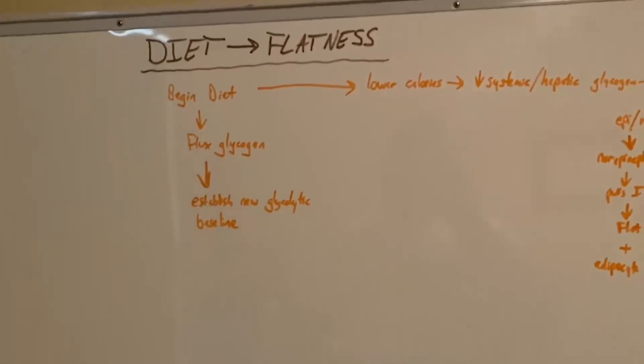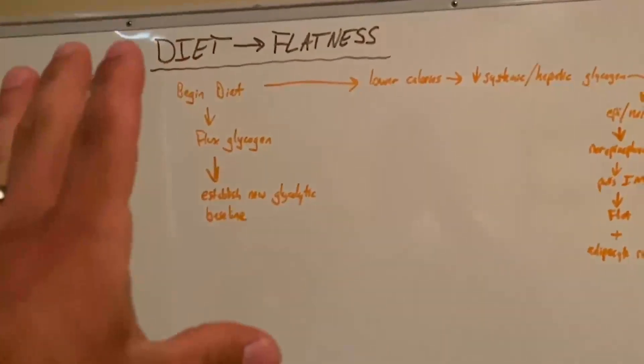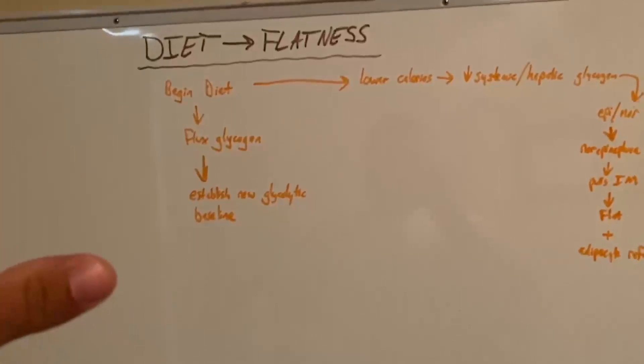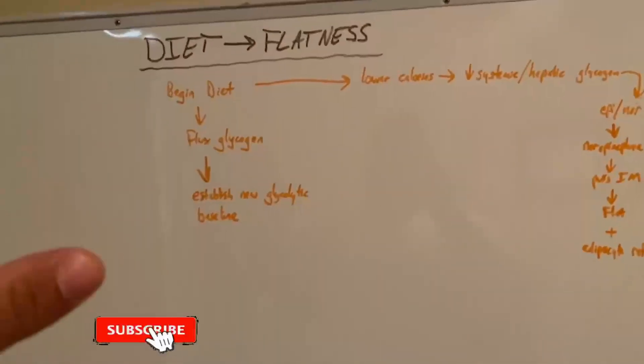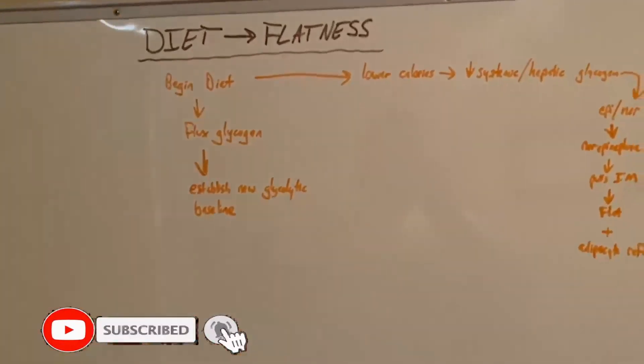That's essentially why we look so flat and so crappy during the first couple weeks of a diet. It's supposed to be like that, that's how our biology works, and that means that you're doing things right. So the first four or so weeks of dieting, you should probably look crappier before you look better.